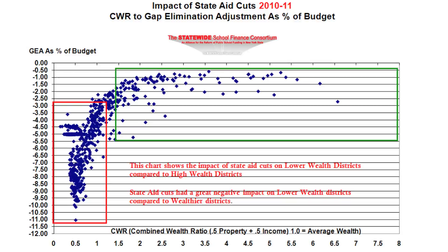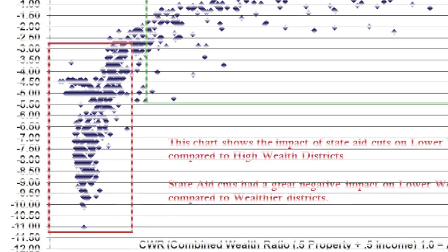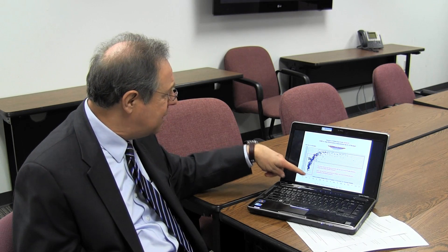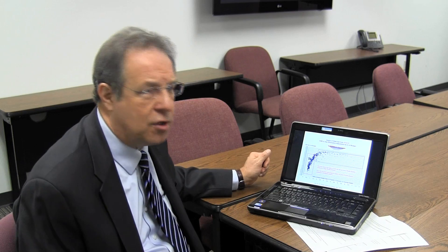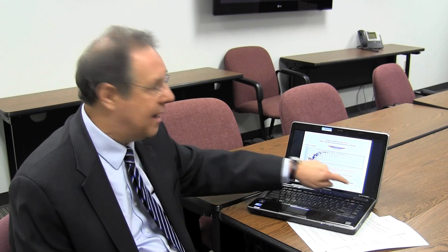If I have a combined wealth ratio of one, hypothetically my income and property values on average are equal to the state average. All the districts in this box have an average CWR of 1.25 and lower, so they are average to below-average wealth — we consider 1.25 and lower to be average or below average. A district with a combined wealth ratio of 2 has income and property values twice the state average; a ratio of 3 is three times, 5 is five times, and 8 is eight times the state average.